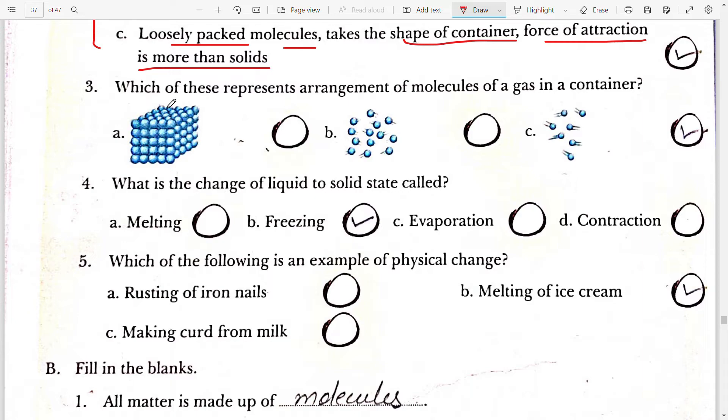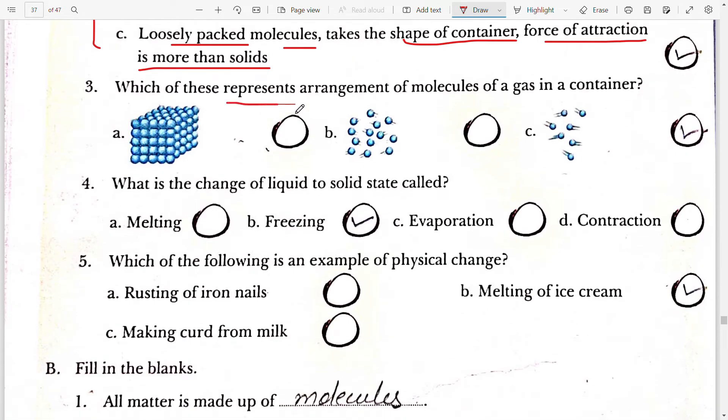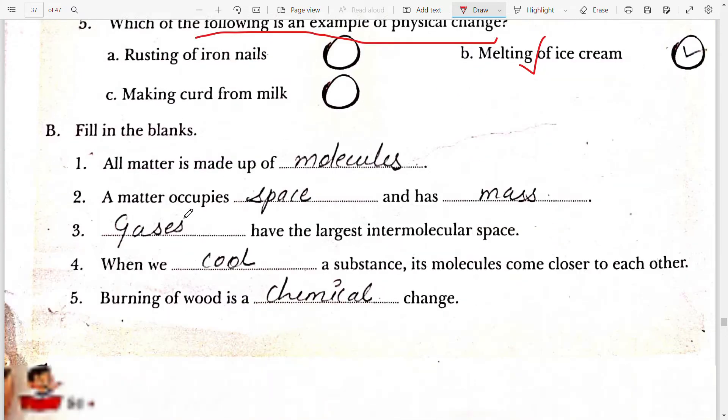Next, which of these is a chemical change of molecules in a gas in a container? So option C is the correct answer. What is the change of liquid to solid state called? It is freezing. Which of the following is the example of a physical change? Melting of an ice cream is the correct answer.